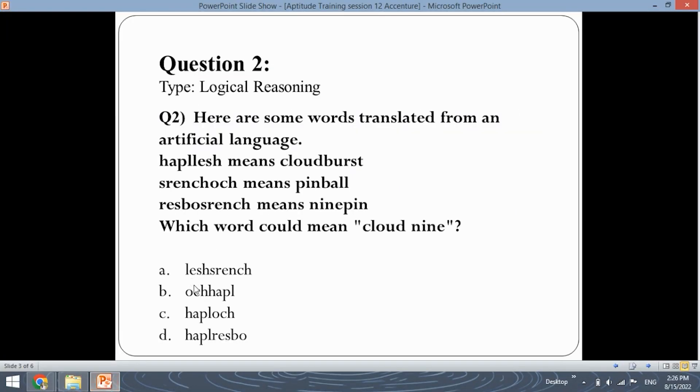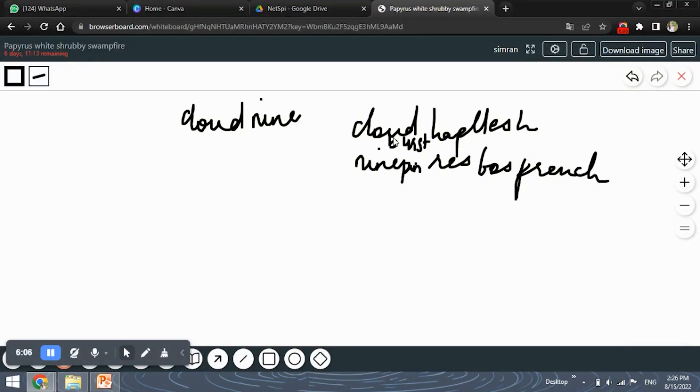Why? Because here, from this analogy, you can see that cloud will mean hapl, and nine will mean respo. So, the answer will be haplrespo, which is option D.